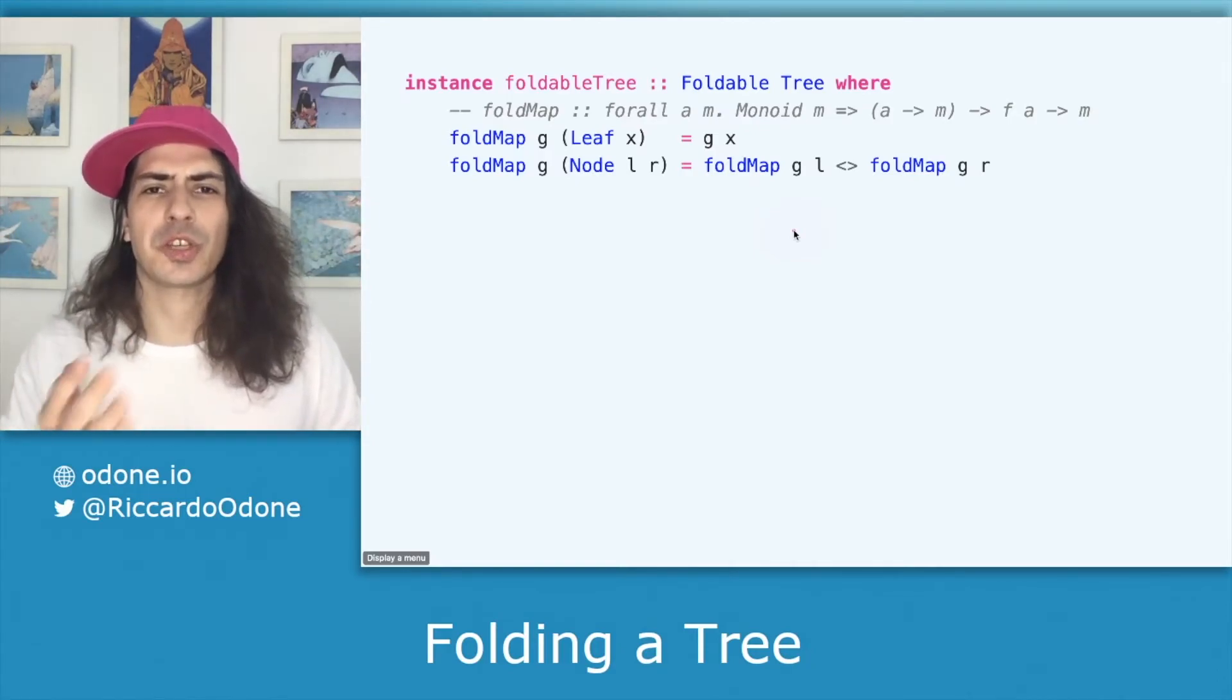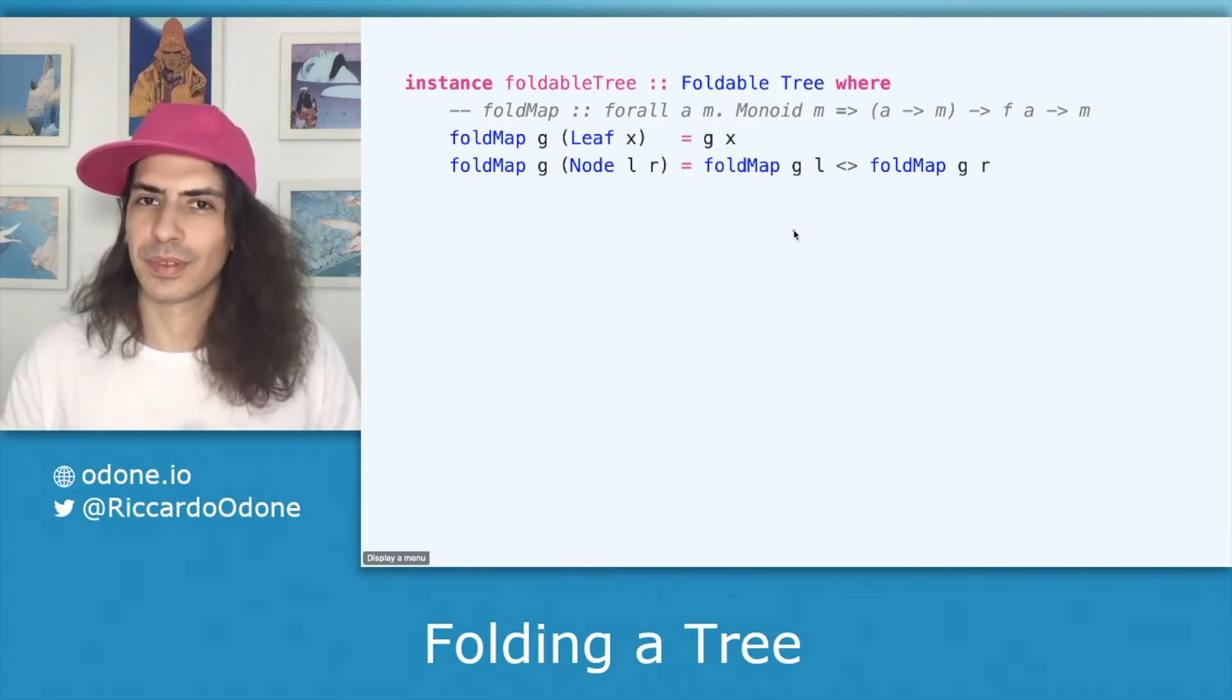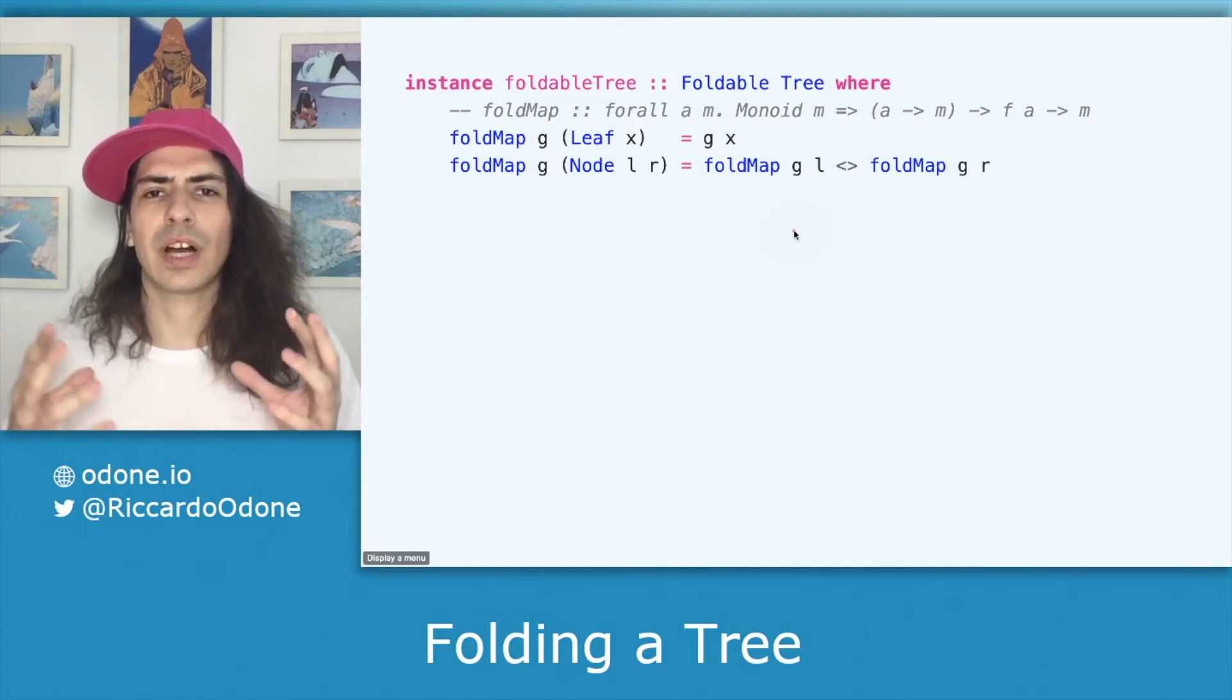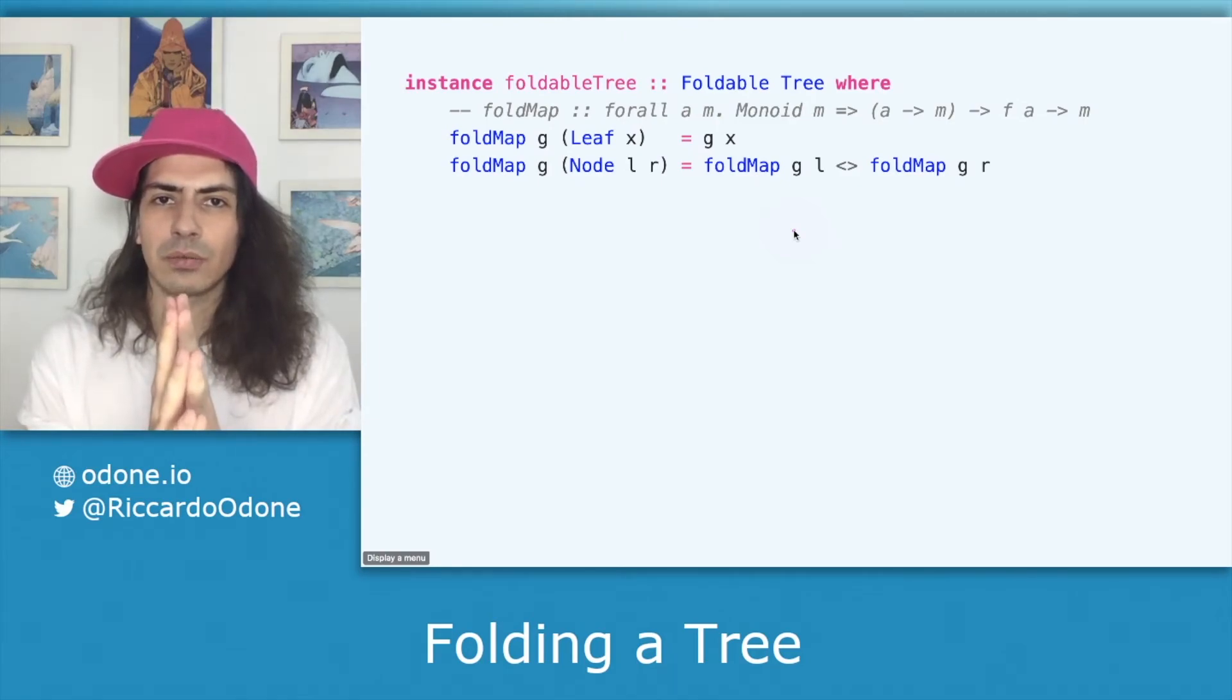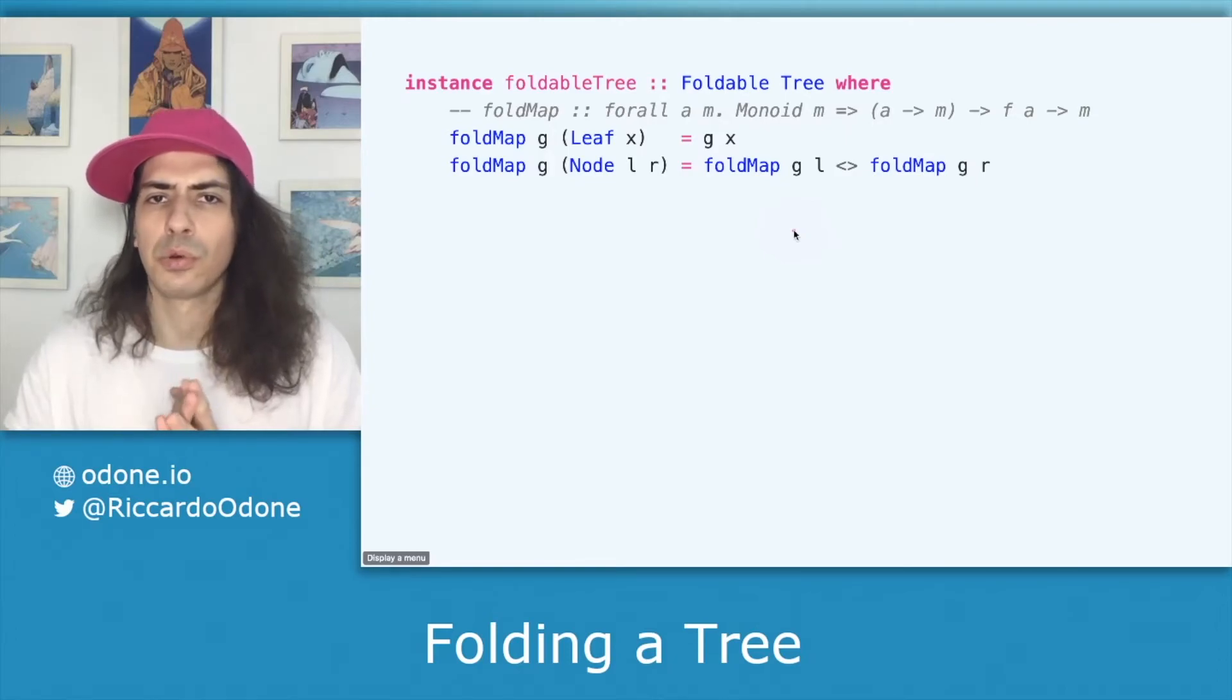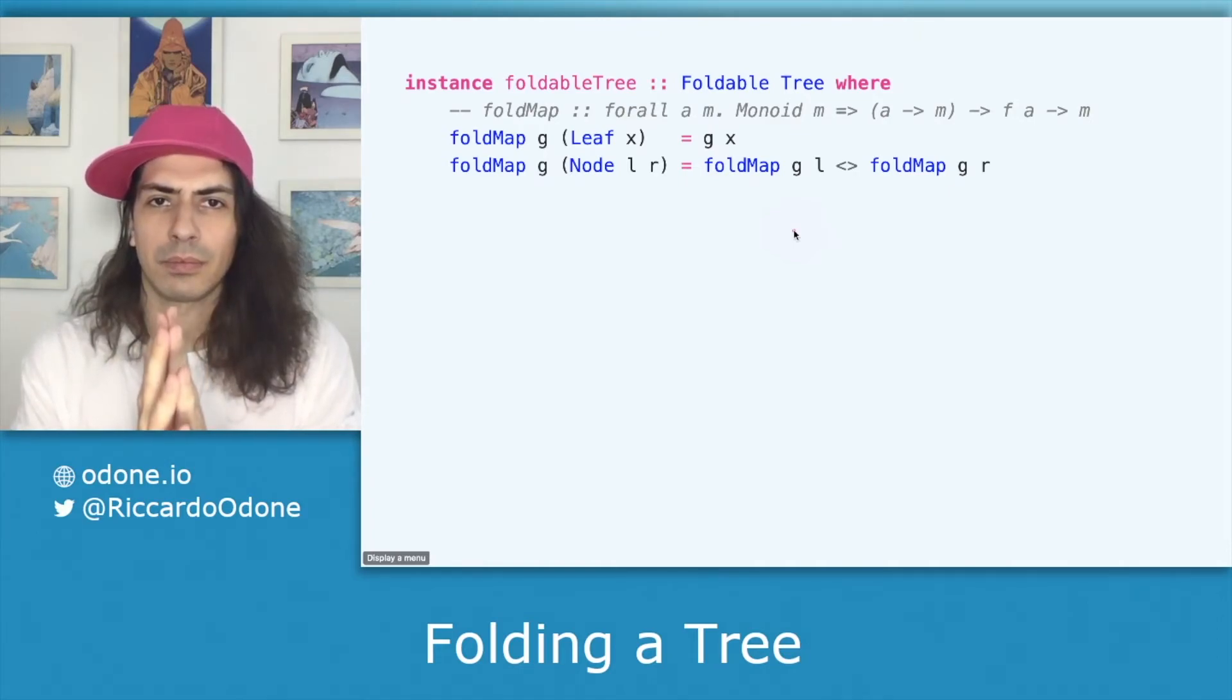Speaking of PhDs here we have the term monoid which is a complicated word to say that if a type is a monoid we can take multiple values of that type and squash them together into one single value. So for example with string we can take two three four an infinite amount of strings and squash them together by concatenating them. So in other words string is a monoid.